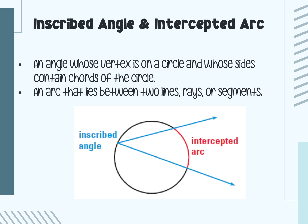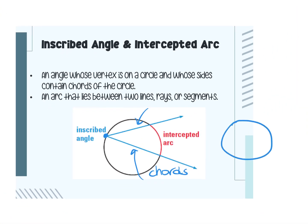Before we only talked about central angles, and that's when the vertex was at the center of the circle. When we describe an inscribed angle, the vertex is sitting on the side of the circle, and the sides of this angle are going to be cords. With a central angle, the sides were formed by radii. So that's the difference between a central angle and an inscribed angle.